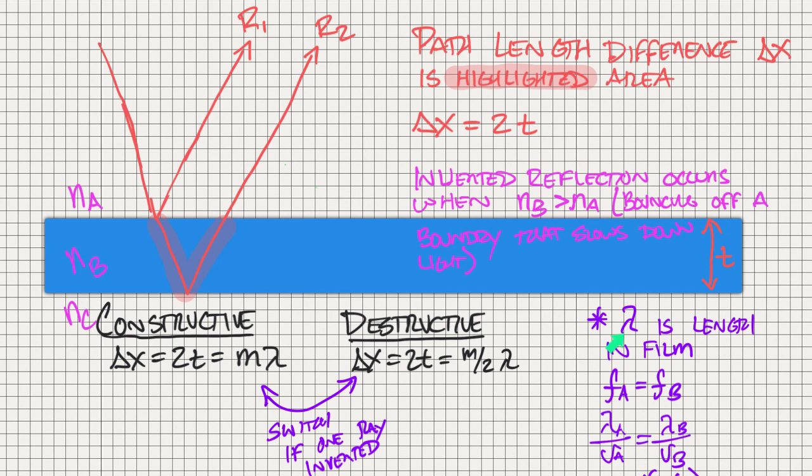We need to understand that when we're doing these equations, the wavelength which we're using in these for the measurements is the wavelength that is found in the film, and not the original wavelength, which would be right here.